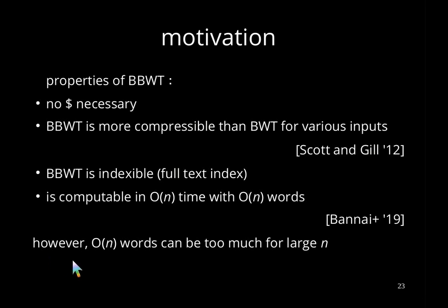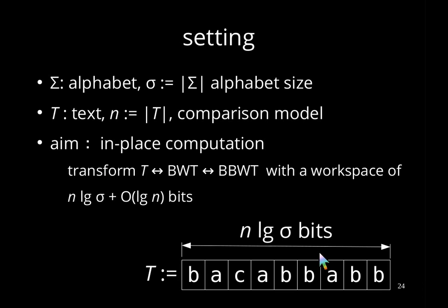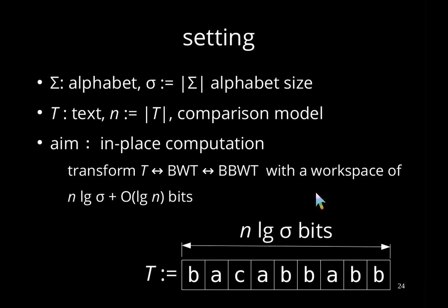However, this linear number of words can be too much for large N. In our setting, we focus on an alphabet sigma with small sigma as the alphabet size, a text T of length N in the comparison model, and aim for in-place computations between the text, the BWT, and the BBWT with working space of N log sigma plus O(log N) bits, where N log sigma already covers the text space.